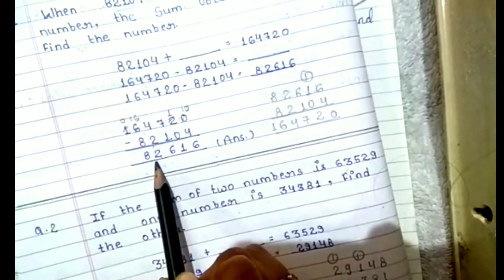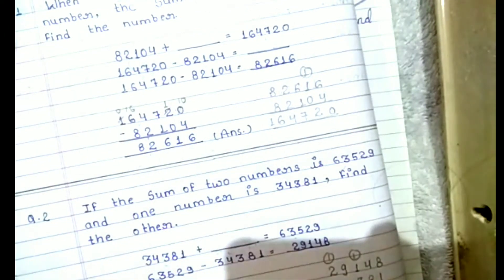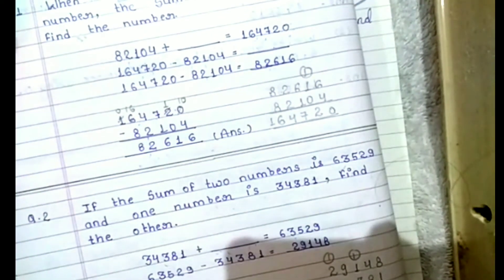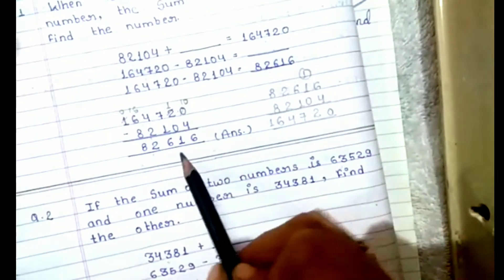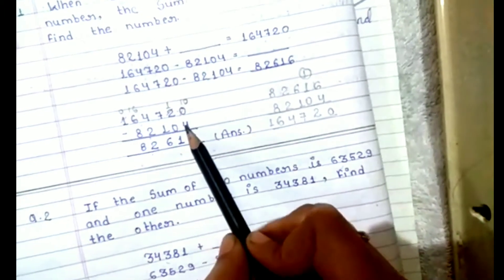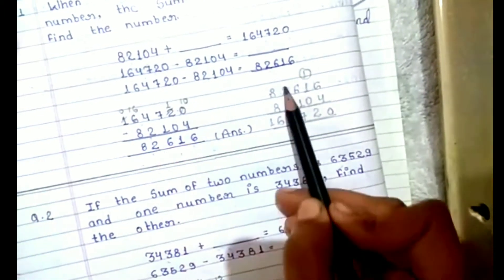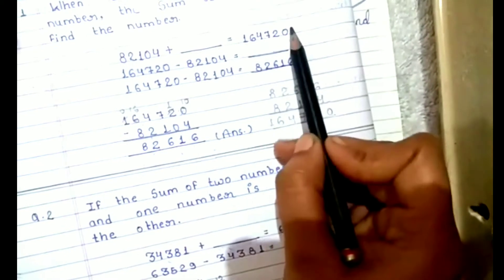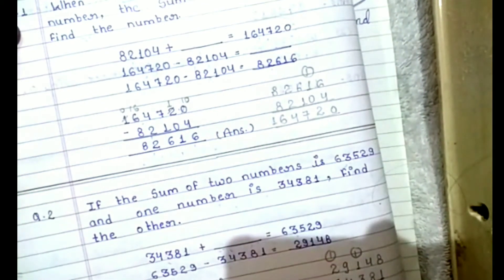तो अपना answer आ गया। और यदि अपन को अपना answer match करना है कि ये correct है कि नहीं, तो जो minus करने पर ये आया, अपन इसको और उसके just ऊपर वाले दोनों addends को plus करेंगे, और उसका answer यही आ जाएगा। That means कि जो अपना addend निकाला है वो correct है।